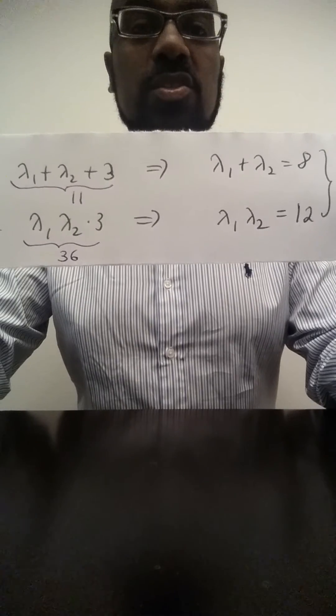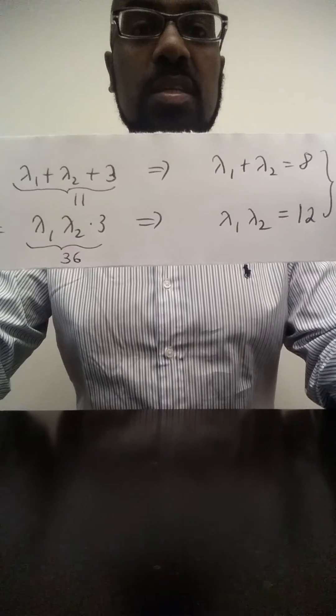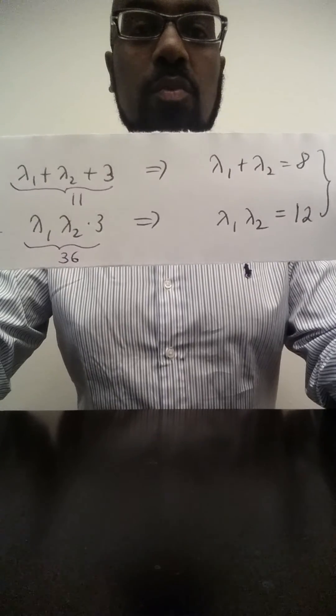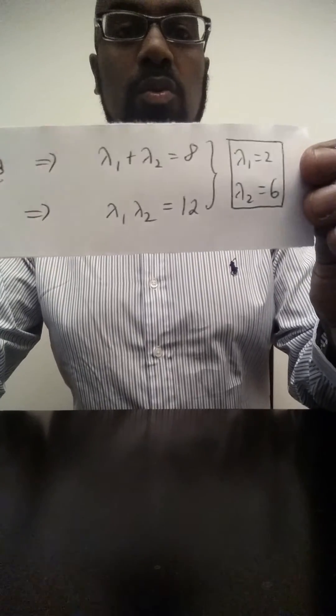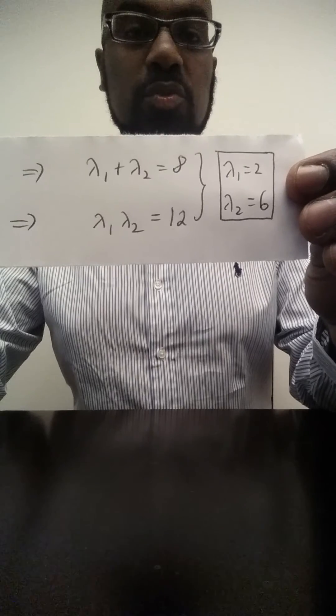And we can quickly see that a solution to this system is letting one of them be 2 and the other one be 6. And so the remaining eigenvalues are 2 and 6.